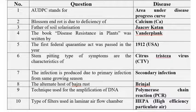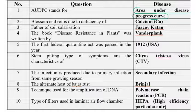The first question: expand AUDPC. AUDPC stands for Area Under Disease Progress Curve. You should know that the Area Under Disease Progress Curve was given by Van der Plank, who is considered the father of plant disease epidemiology.